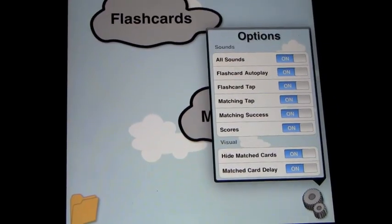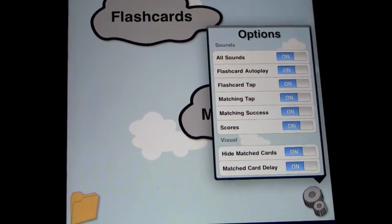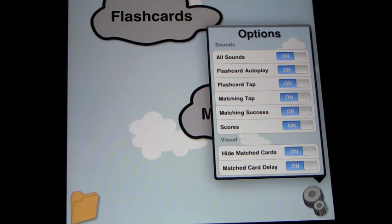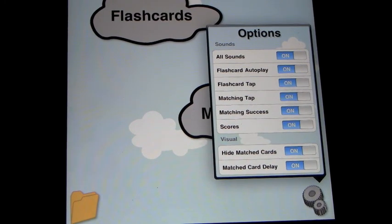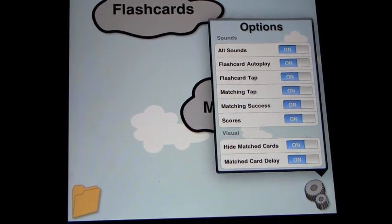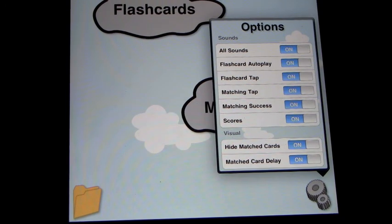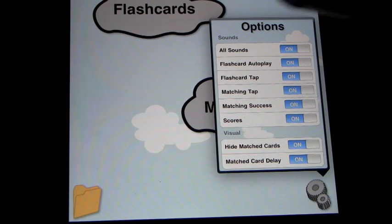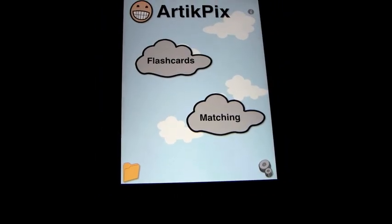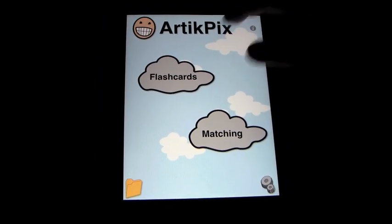And what we're going to do is we're going to have a look at the options quickly. And as you can see, there's a bunch of them: all sounds, flashcard autoplay, flashcard tap, matching tap, matching success, and scores, hide matched cards, and matched card delay. Obviously you can play around with these, and they do different things. We're not going to demonstrate every single one. We're just going to leave all of them on and demonstrate the main program. So we'll come back out of that, and let's start with the flashcards.